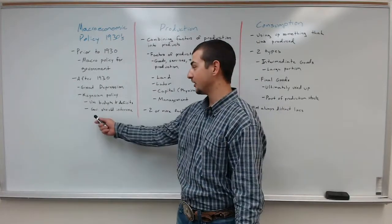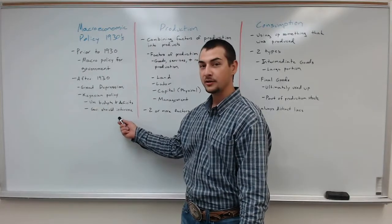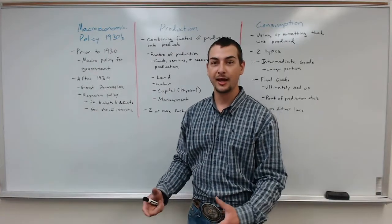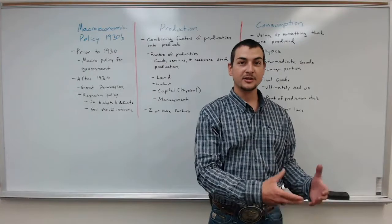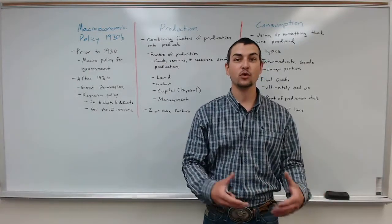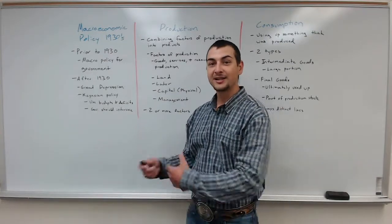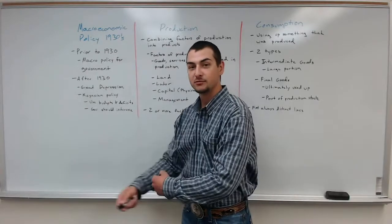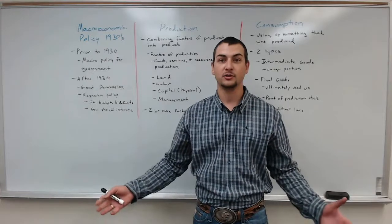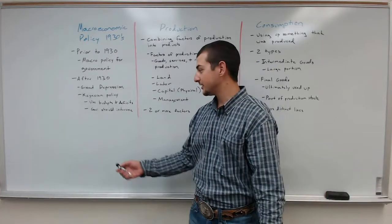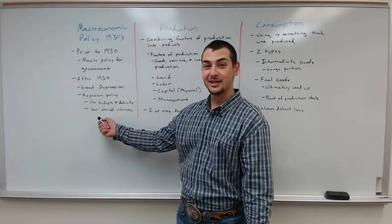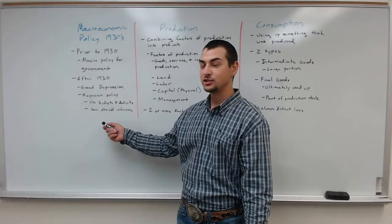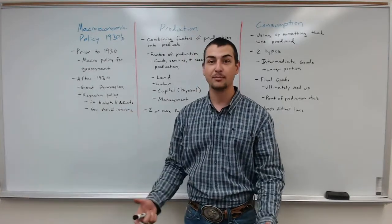The Keynesian Policy said that government should intervene into the macroeconomy. John Maynard Keynes argued that unlike other markets, the macroeconomy is not always a self-correcting process. Whenever it starts spiraling out of control, it picks up speed — like a snowball heading downhill — until it hits the bottom and everything collapses. So the government should intervene whenever the macroeconomic situation is destabilized, using budgets and deficits to help stabilize the economy.